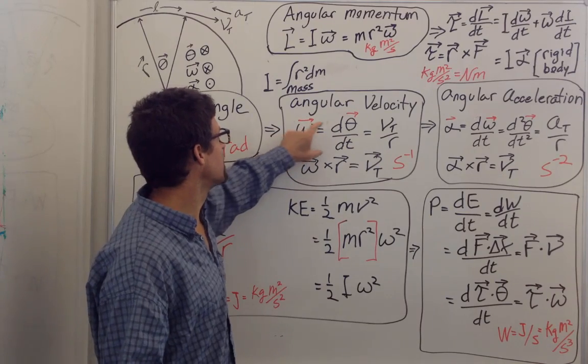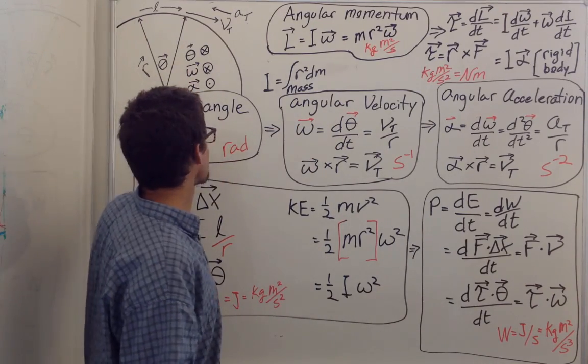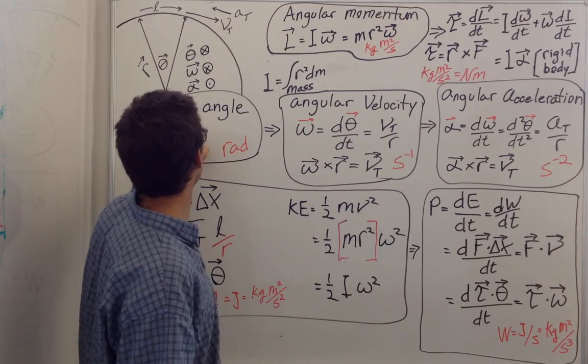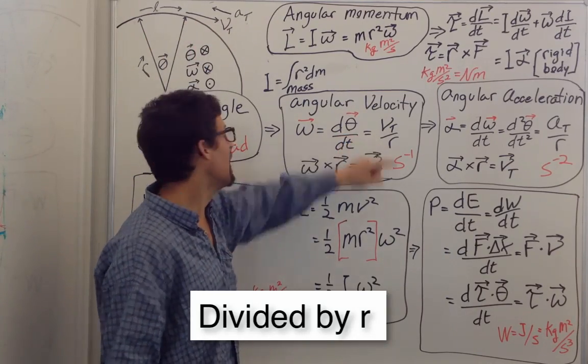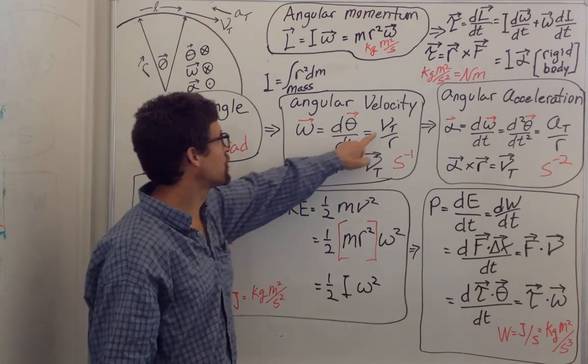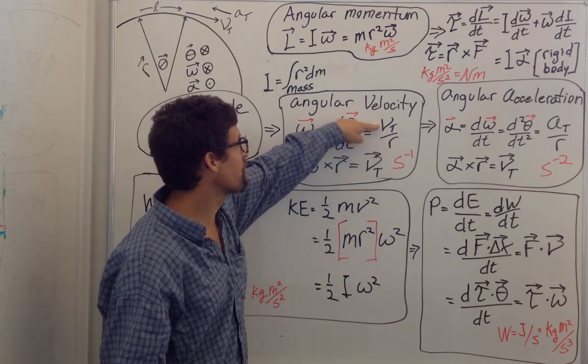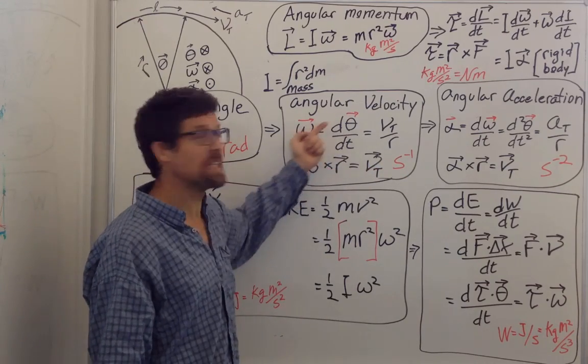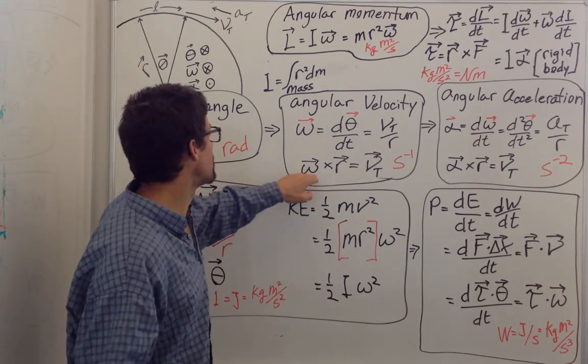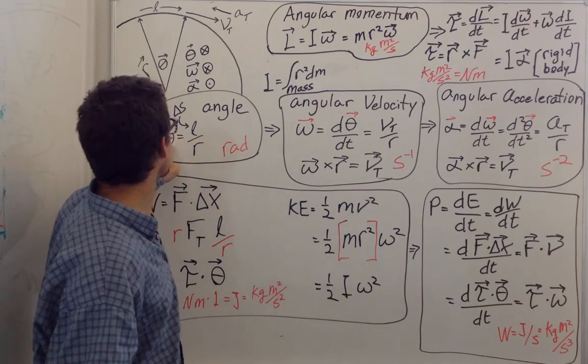Angular velocity is the time derivative of theta, and as r is constant, it's the time derivative of L, which is the tangential component of velocity. That has units of meters per second over meters, which is per second. How about direction? This is a vector. What is the direction of omega? What is the direction of theta?